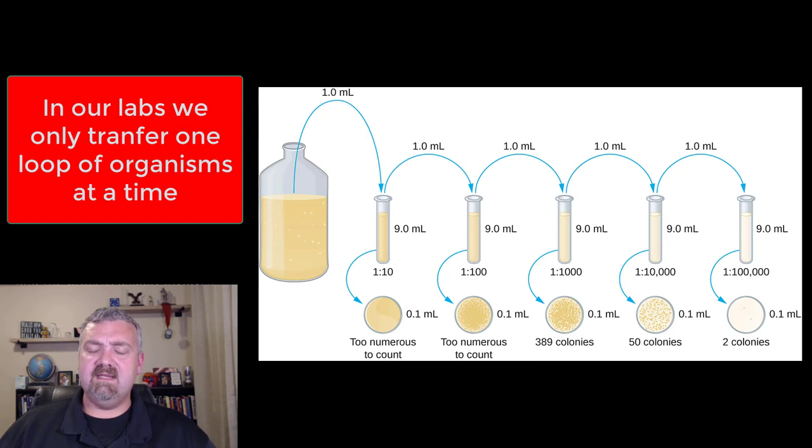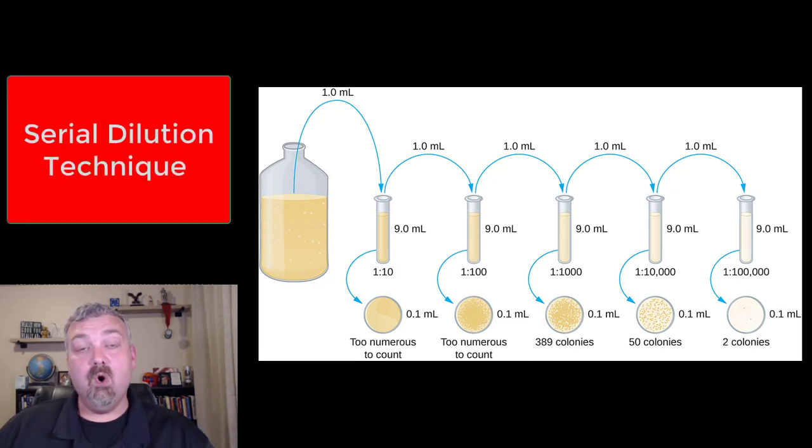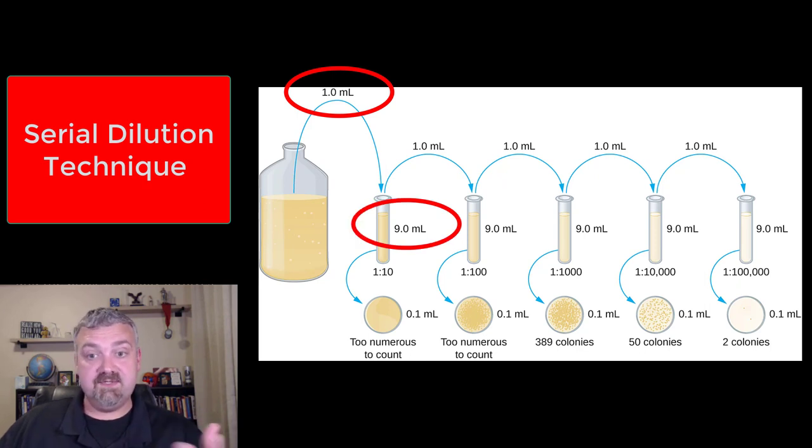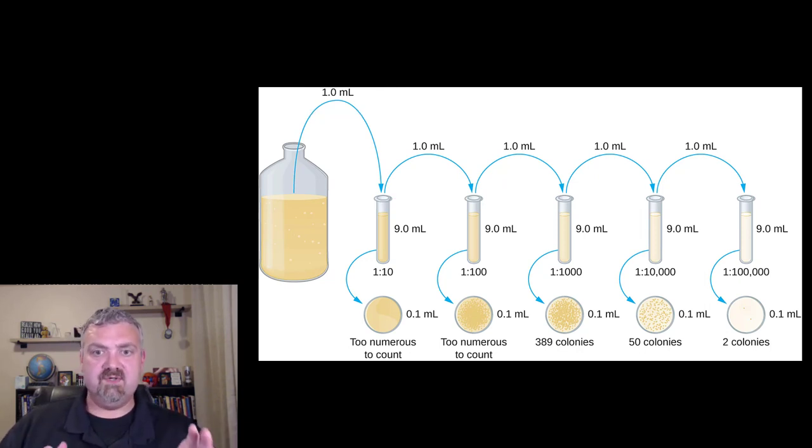In the lab, we do it slightly differently because we're using much smaller samples, but this is the serial dilution technique. So you start with your original sample and notice you're taking one milliliter of your sample and adding it to nine milliliters of sterile nutrient agar or broth here. So, that's a one to ten, so you're just adding a single milliliter of your original sample into this first tube.